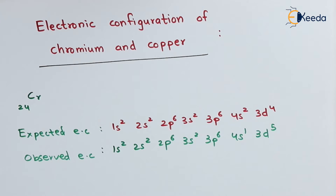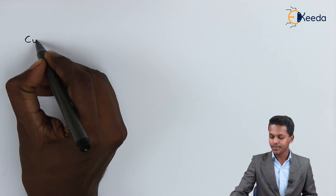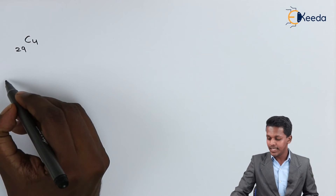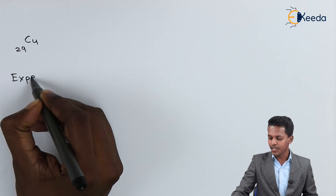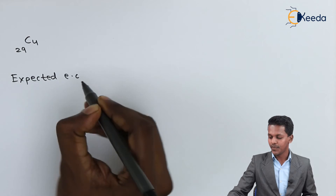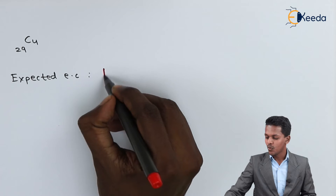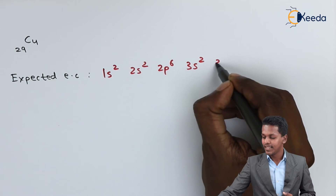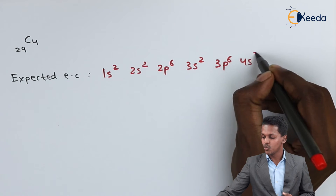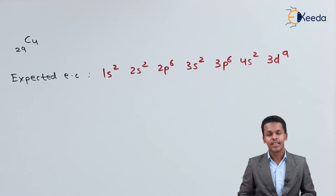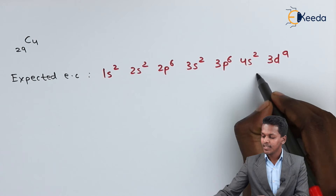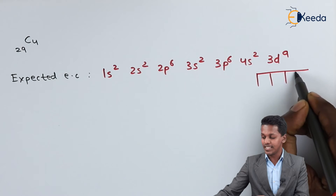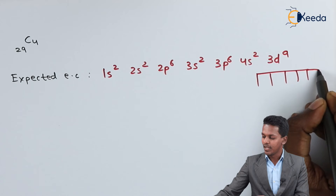Similarly, let us talk about Copper. Copper has an atomic number of 29. The expected electronic configuration can be written as: 1s2, 2s2, 2p6, 3s2, 3p6, 4s2, 3d9.